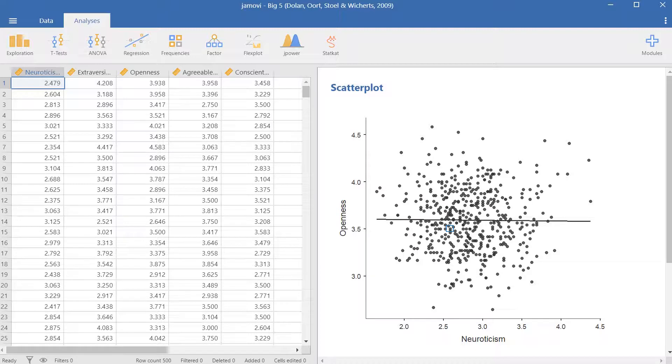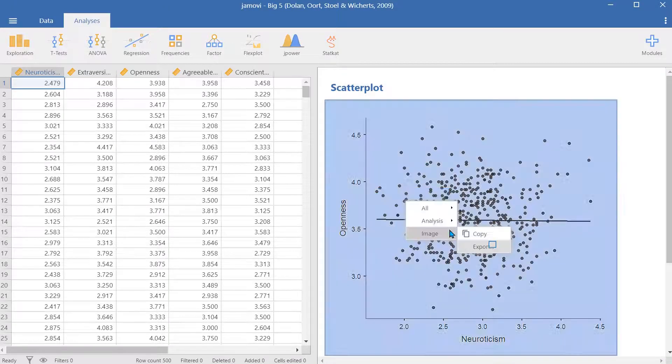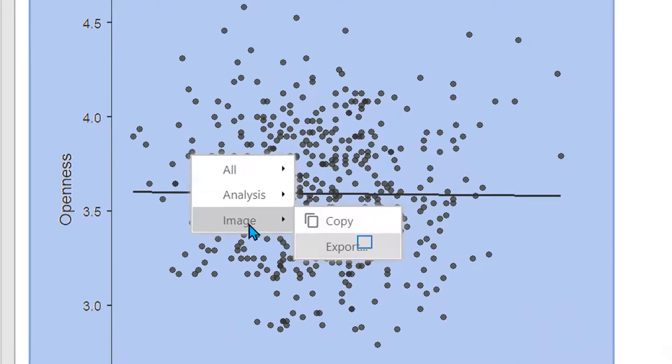After you've made your scatterplot and want to use it in a Word document or save it as an image, you have two ways to do that. You can either save it as an image and copy it, or you can export it.